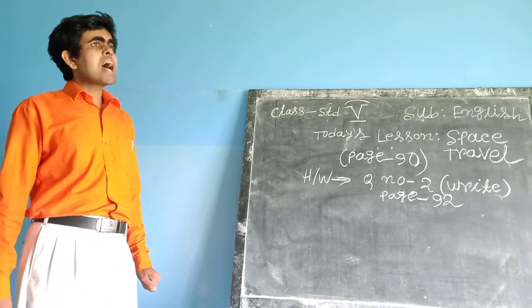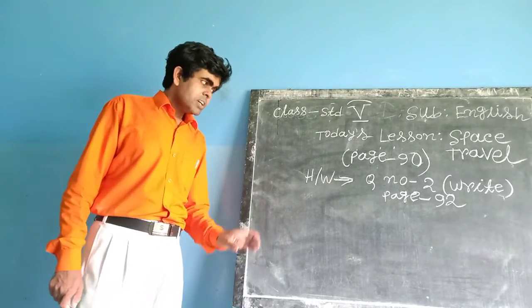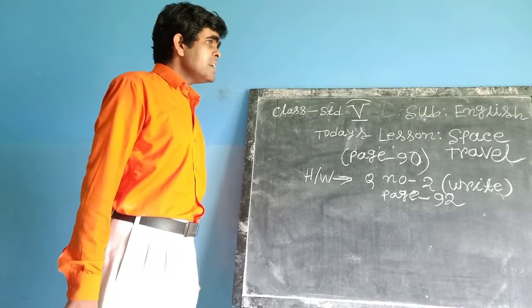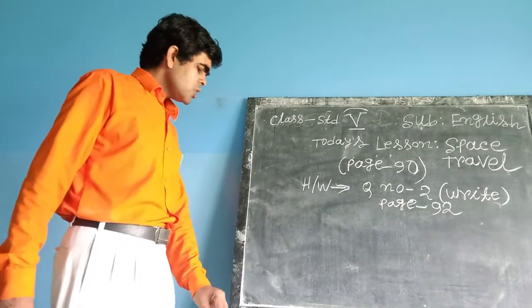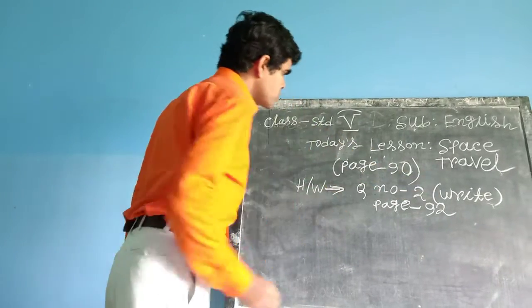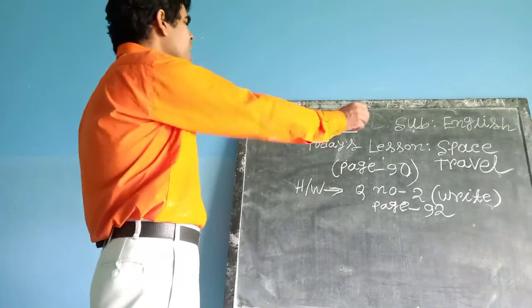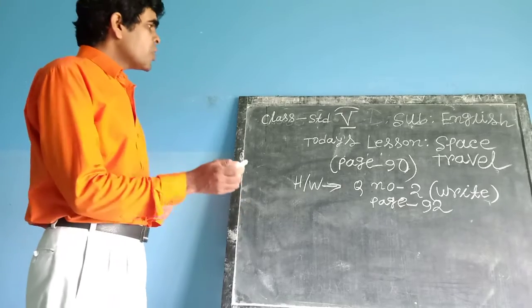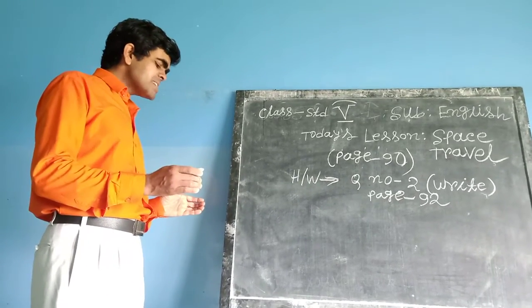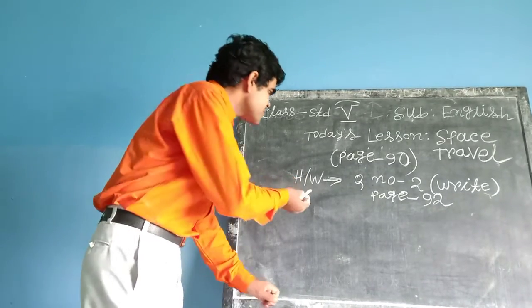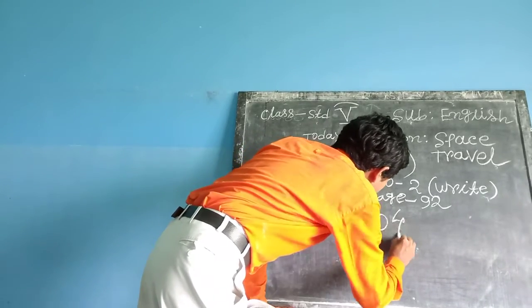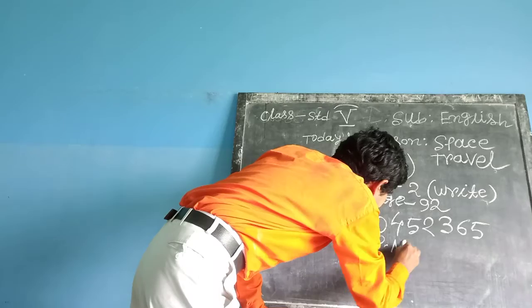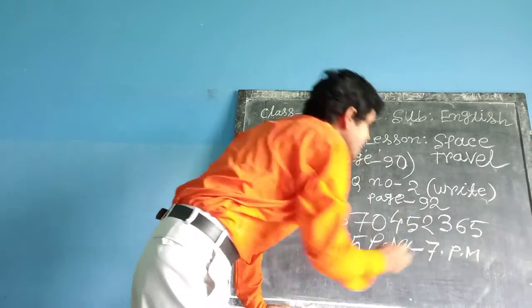And your another homework is question number two, page number 92, true or false from this passage. That is your today's homework. If you face any problem to read this passage, any word or any question or answer, you may contact through this number: 8670452365. Thank you.